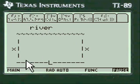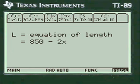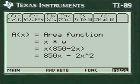Here's a picture of it. Here's the river and you've got the x on each side and the length of the other side. Generally in a problem the tests are going to ask you to find the equation for the length. Here's the equation: 850 minus 2x. Write that on your paper. Here's the area function x times w. Write this on your paper: 850x minus 2x squared. We multiplied x times 850 and 2x.